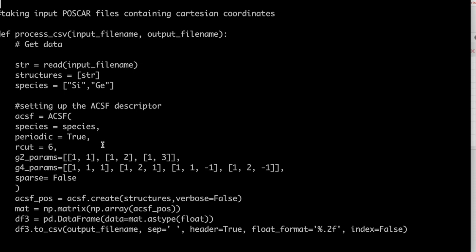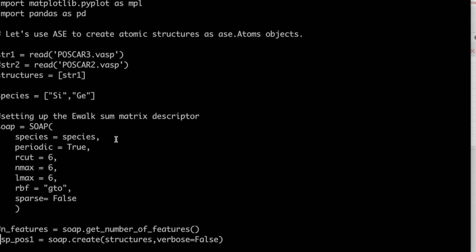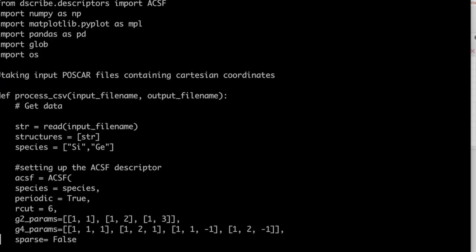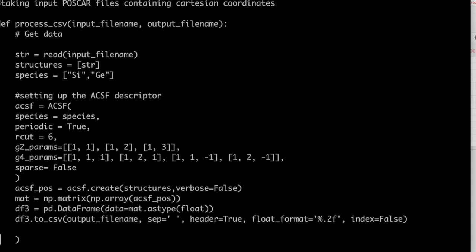If you are working with another descriptor such as SOAP, this is an example of where descriptor parameters are defined. Moving back to ACSF, we recognize species and then whether the structure is periodic or not. We define the R-cut. The R-cut is the cutoff radius around the atom until which interactions are taken into account.